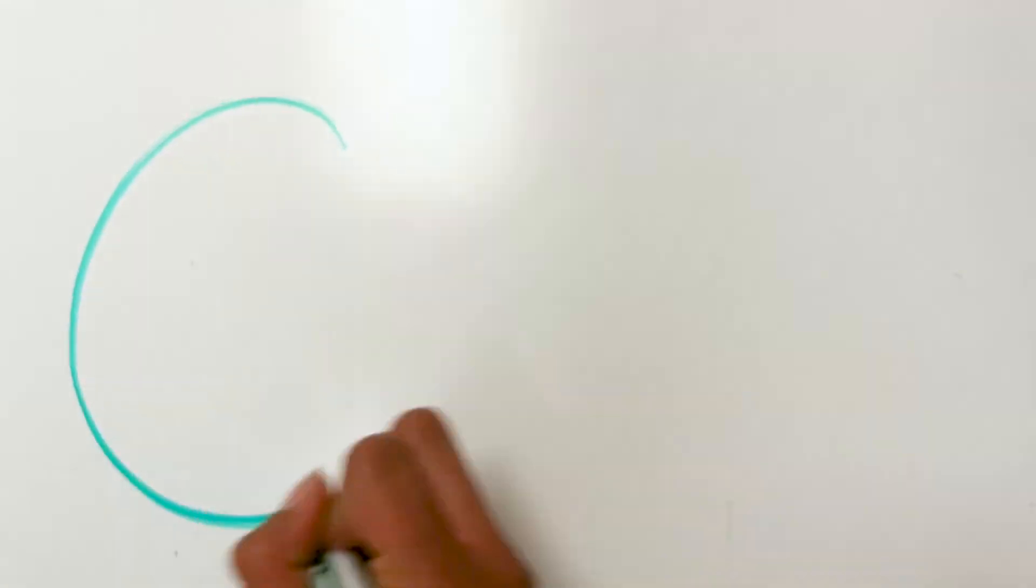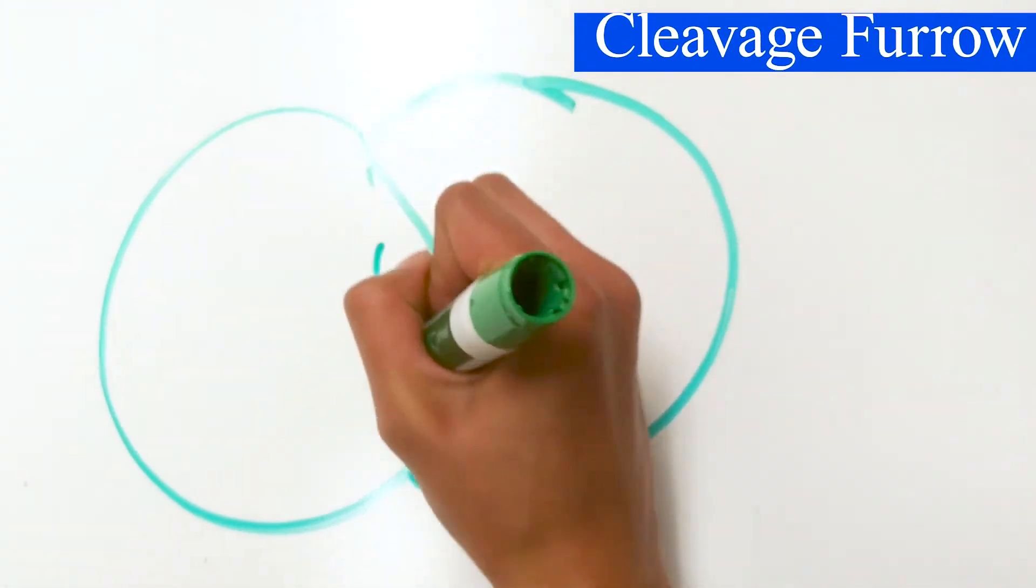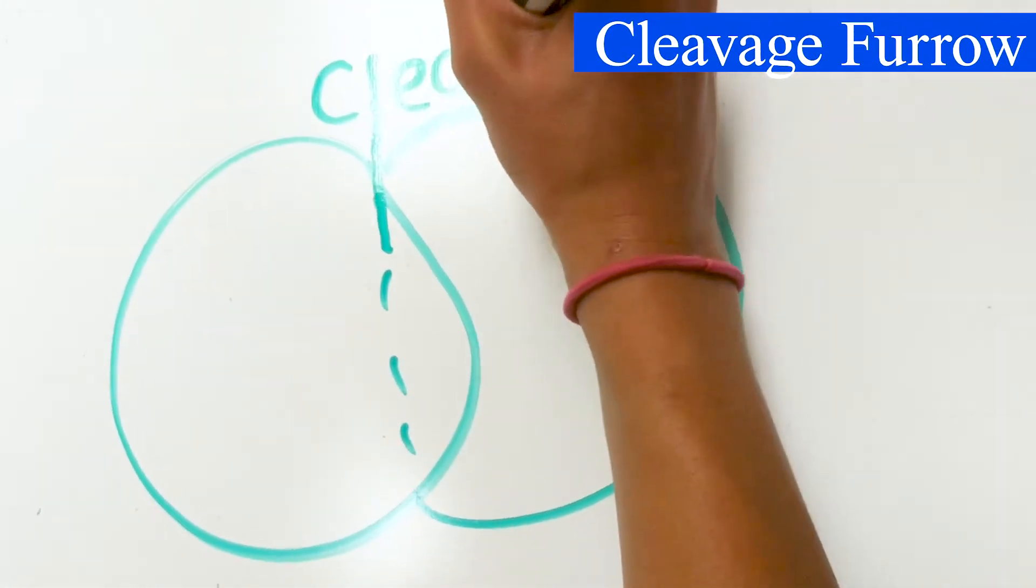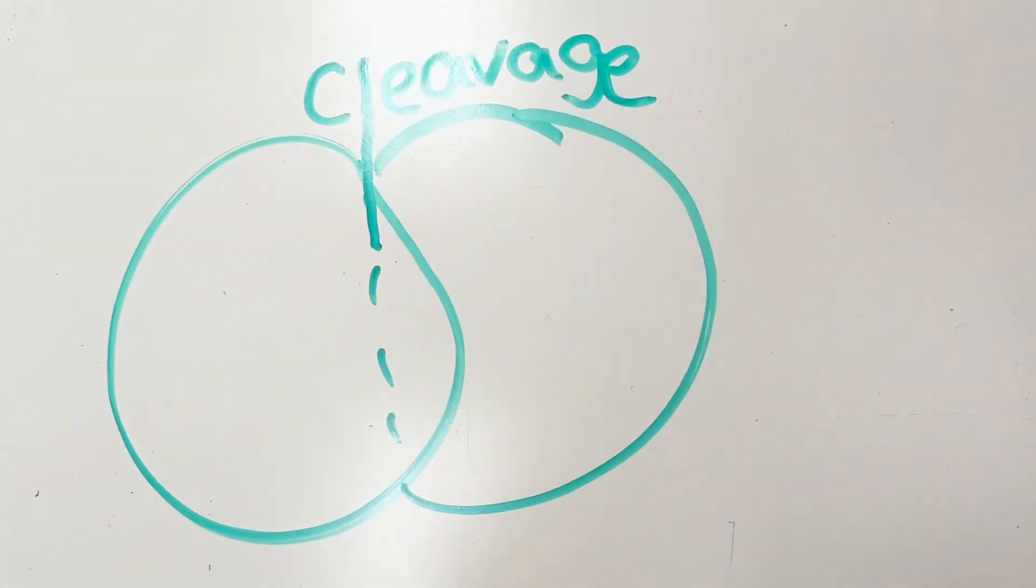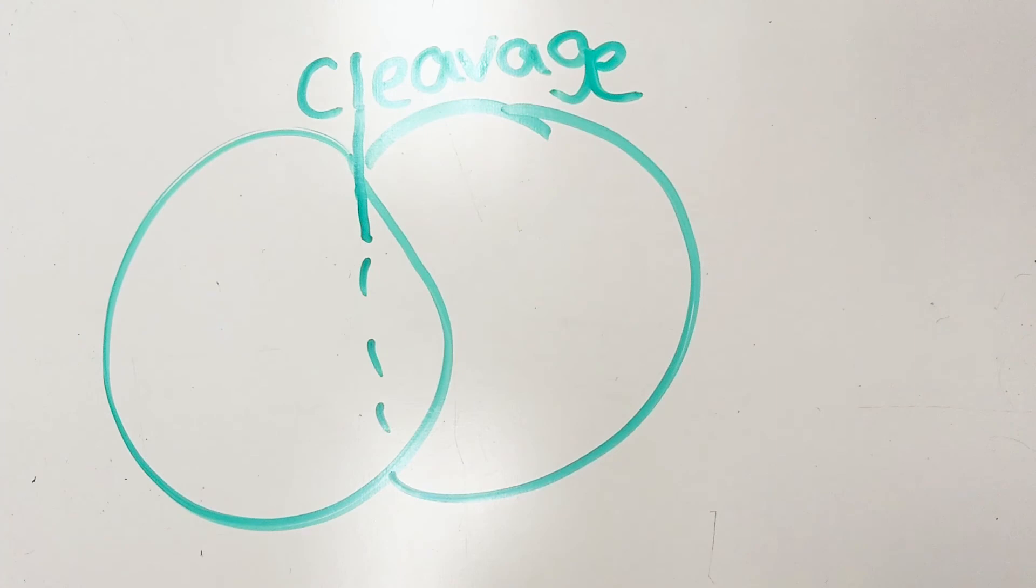Animals, however, divide by a cleavage furrow. This occurs when a cleavage forms in the middle of the cell. Then its furrow deepens until it meets the membrane. When the membrane fuses, the cell divides.